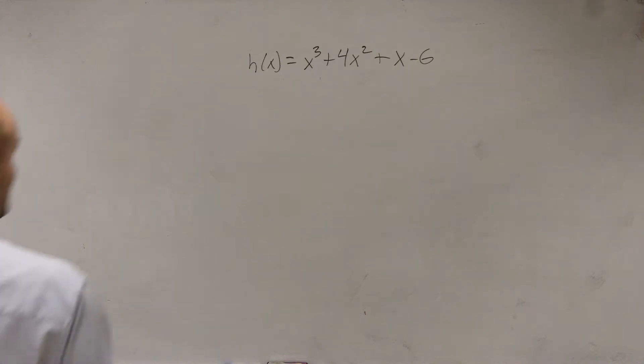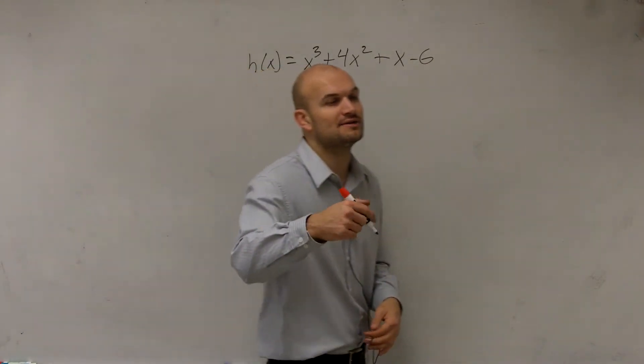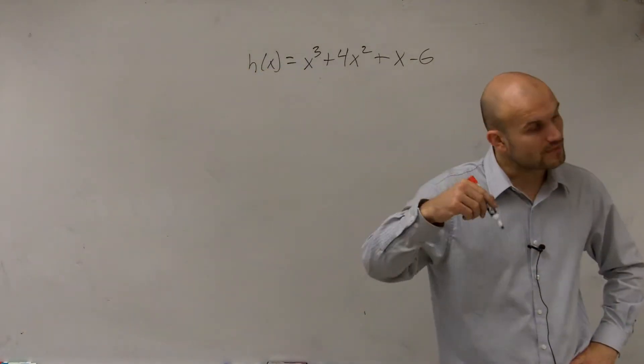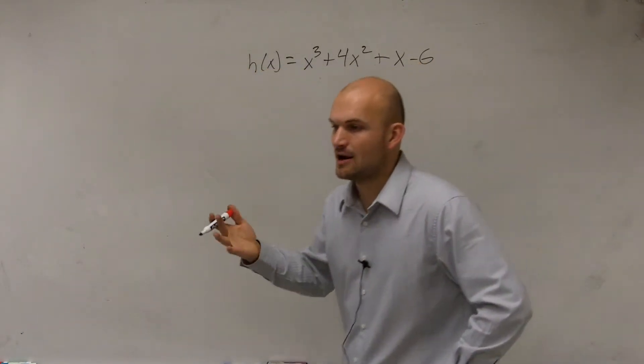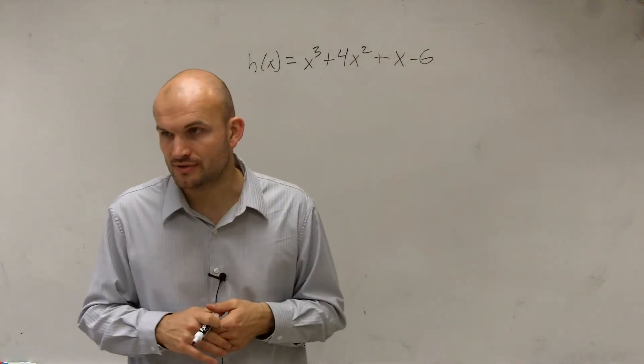So to do this problem, the first thing we want to do is, if it says find all the zeros, my best advice would be first write this down. And then I would write down all of the possible rational zeros.